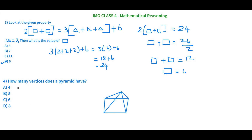The fourth question for today: how many vertices does a pyramid have? The options are 4, 5, 6, and 8. Vertices are the points where two or more straight lines meet. Counting the points on a pyramid — 1, 2, 3, 4, 5 — a pyramid has five vertices.